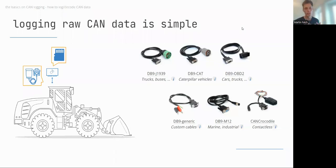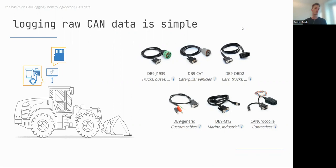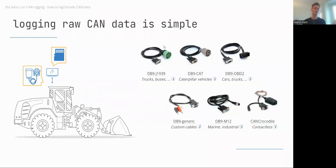The first step is having a device to record the data. Assuming you have a device, how do you connect it to your application? For a heavy-duty vehicle like an excavator, you might be able to use a Deutsch 9-pin connector, also referred to as a J1939 adapter cable. If the vehicle has a standardized J1939 connector near the steering wheel, you can connect directly and everything is simple.